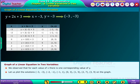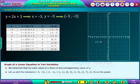Let us plot the solutions: minus 3, minus 3; minus 2, minus 1; minus 1, 1; 0, 3; 1, 5; 2, 7; 3, 9 on the graph.